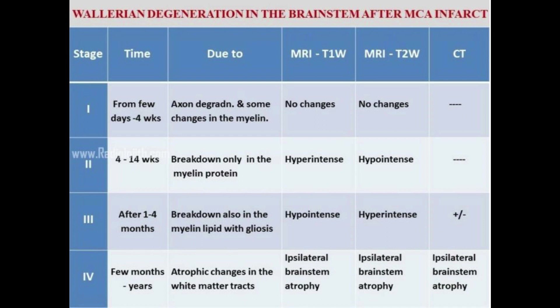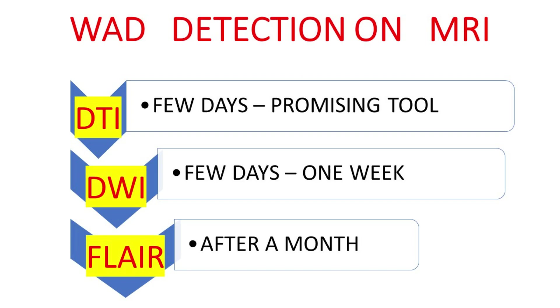In the past few years, MRI has become the keystone for early detection of Wallerian degeneration, with the availability of diffusion weighted imaging (DWI) and diffusion tensor imaging (DTI). It is documented that DWI detects one fourth of Wallerian degeneration cases after four days, and DTI detects almost two fourths after four days — and sometimes even earlier.